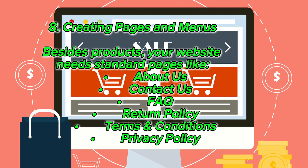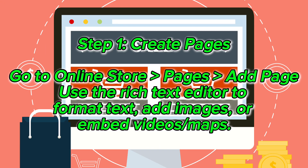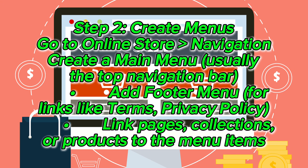Creating pages and menus: Besides products, your website needs standard pages like About Us, Contact Us, FAQ, Return Policy, Terms and Conditions, and Privacy Policy. Go to Online Store > Pages > Add Page and use the rich text editor to format text, add images, or embed videos and maps. For navigation, go to Online Store > Navigation. Create a main menu (usually the top navigation bar) and a footer menu for links like Terms and Privacy Policy. Link pages, collections, or products to the menu items.